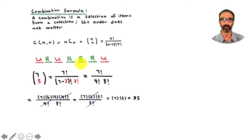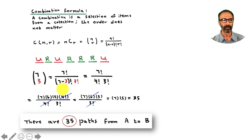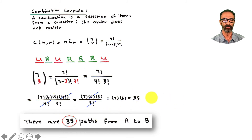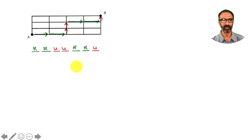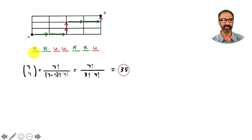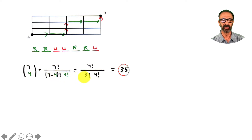The answer is 35 paths. You might ask: instead of picking the three 'up' positions, can I pick the four 'right' positions instead? Yes — and the answer is the same. Computing C(7, 4): 7! divided by (7−4)! × 4! = 7! / (3! × 4!) also simplifies to 35.